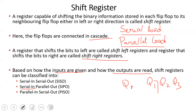Parallel in serial out: all flip-flops receive simultaneous input, but data is retrieved from the last flip-flop serially. Parallel in parallel out: all flip-flops receive simultaneous input and all outputs are read simultaneously. These are the four major classifications of shift registers.